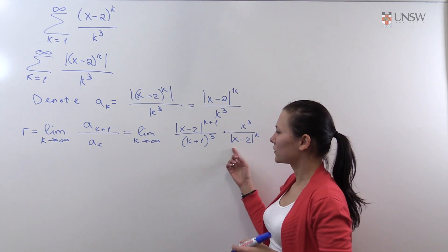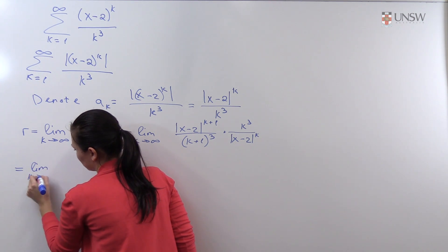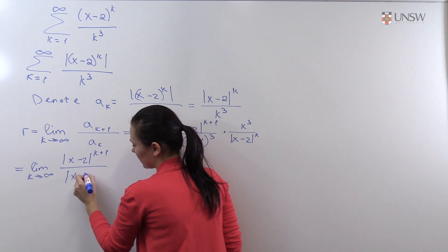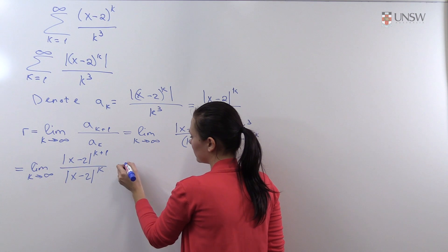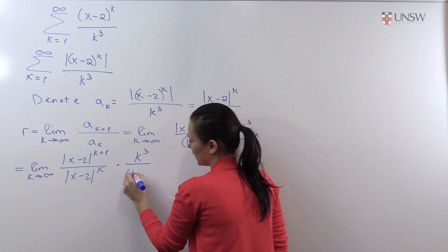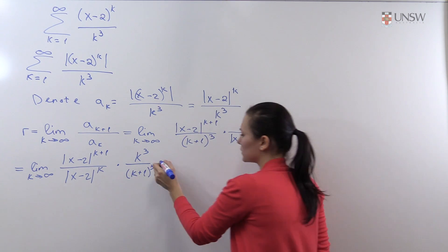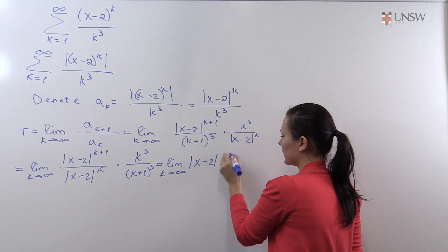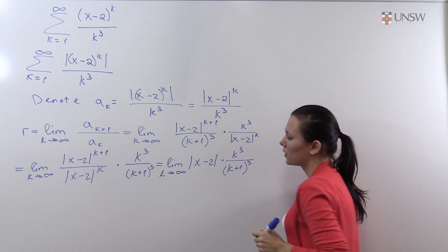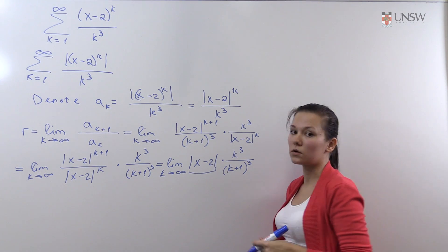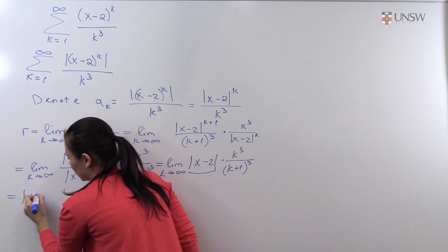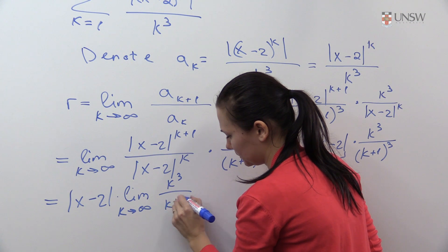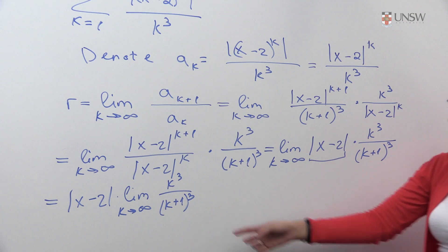We rewrite this as the limit as k goes to infinity of |x minus 2|^{k+1} over |x minus 2|^k, multiplied by k^3 over (k+1)^3. This simplifies to the limit as k goes to infinity of |x minus 2| times k^3 over (k+1)^3. Since |x minus 2| is a constant with respect to k, we can pull it outside the limit.